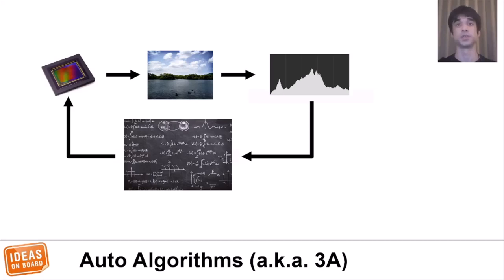The same is true for white balance, which requires adjusting color gains based on the light of the scene, or for focus as people can move in front of the camera. Parameters that control the lens, the sensor, and the ISP need to be computed in real time, based on an analysis of the captured images. This is computationally intensive, but fortunately the ISP comes to the rescue by computing statistics such as histograms.